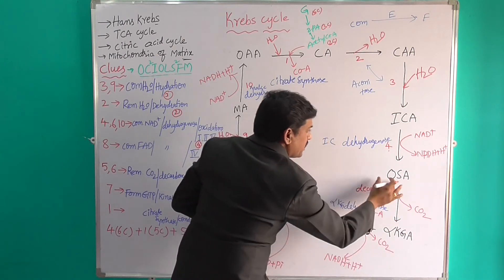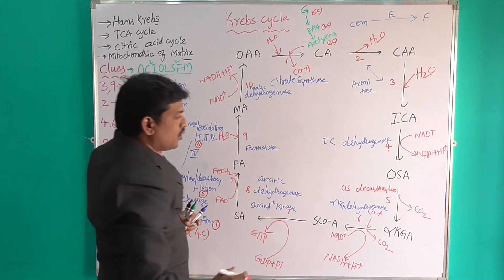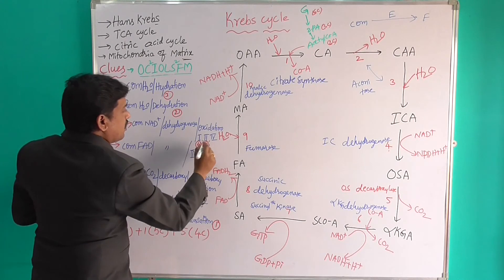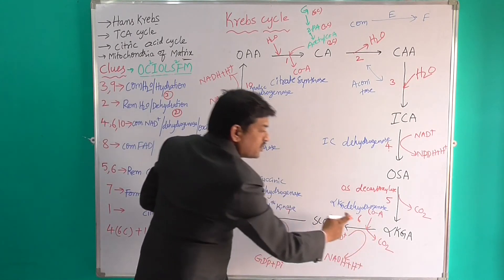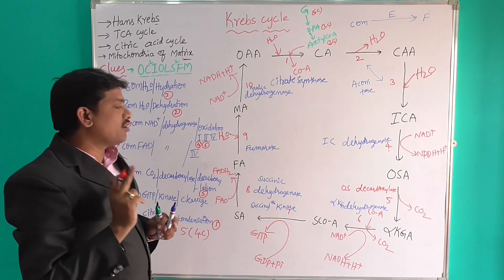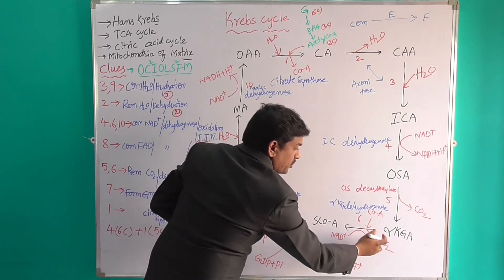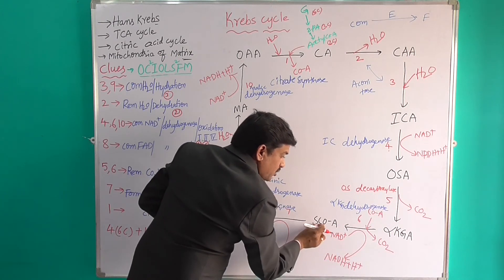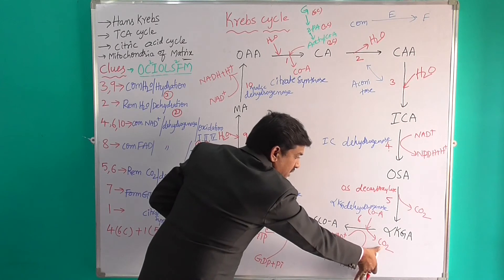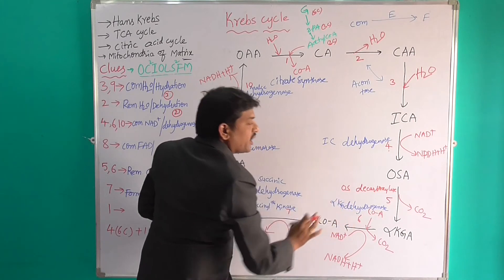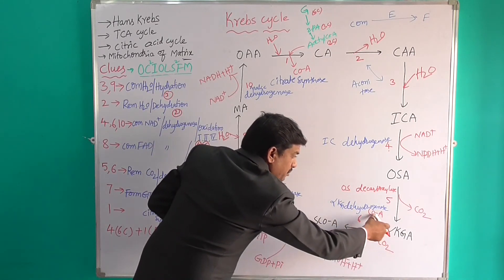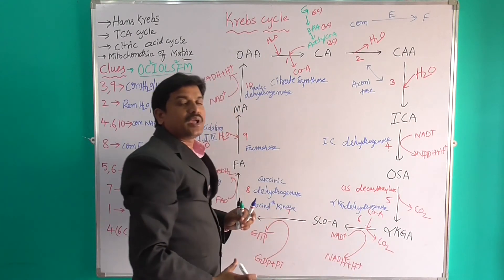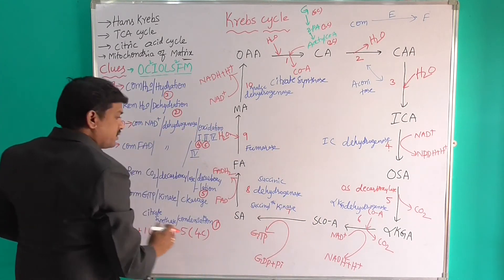Stage 6 is Oxidation Number 2 and Decarboxylation — this stage is very important. Alpha-Ketoglutaric acid is combined with Coenzyme A and NAD⁺ to form Succinyl-CoA, NADH + H⁺, and carbon dioxide. This reaction is catalysed by Alpha-Ketoglutaric Dehydrogenase.